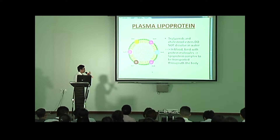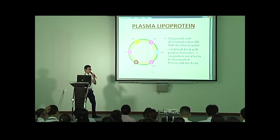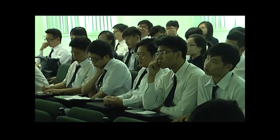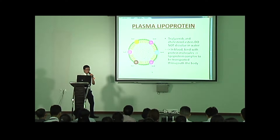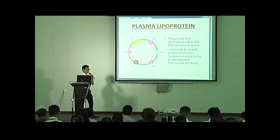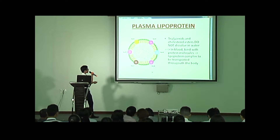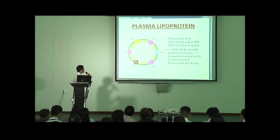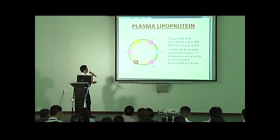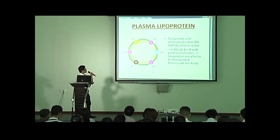Last one: lipoprotein. Lipoprotein is a lipid combined with protein. Triglycerides and cholesterol esters do not dissolve in water. So in blood, to be transferred throughout the body, lipids must combine with protein molecules to form the lipoprotein complex. Here we have a structure of lipoprotein. The core is apoprotein surrounded by a phospholipid layer. Together, they form a hydrophilic layer to protect the triglycerides and cholesterol esters as they are transported throughout the body.